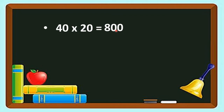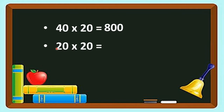So that means 40 into 20 is 800. First we carry out 4 into 2, and then we write 2 zeros after their product. Next: 20 into 20. So here we will multiply 2 and 2. So 2 twos are 4, and these two zeros will come after the product. That is, the answer is 400.